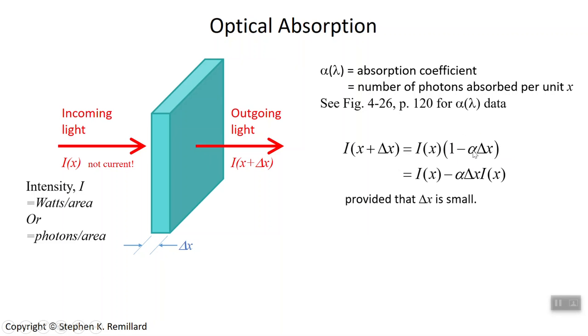So that would be one minus the number absorbed per unit length, alpha times delta x. That's the intensity coming out. I'll break apart the parenthesis there and you can shift it around. You can put the I of x on the left side, bring the delta x over to the left side, and you should see a derivative. If you take the limit of delta x very small you have a derivative.